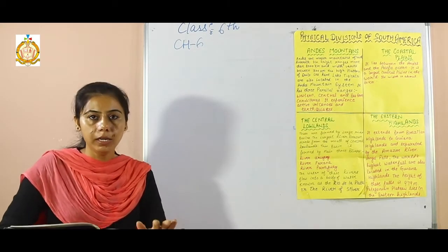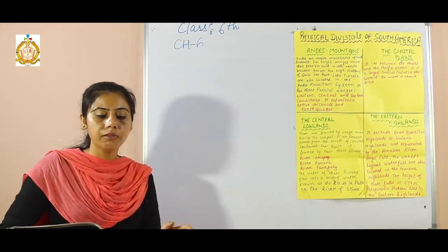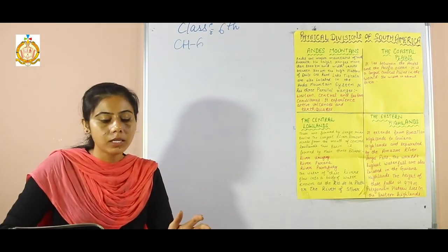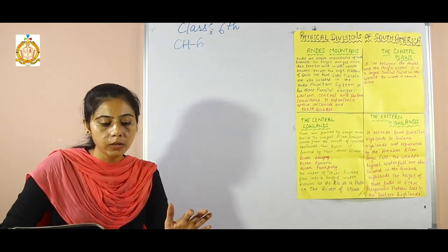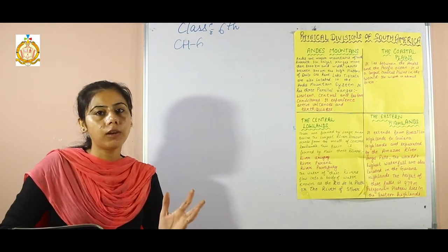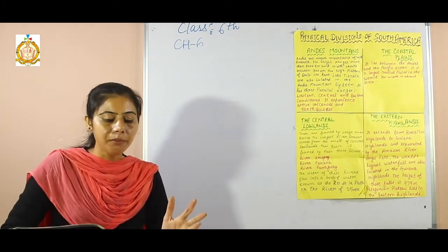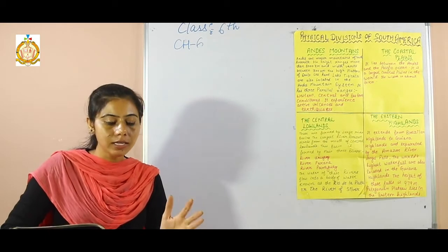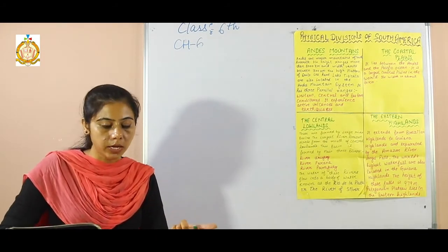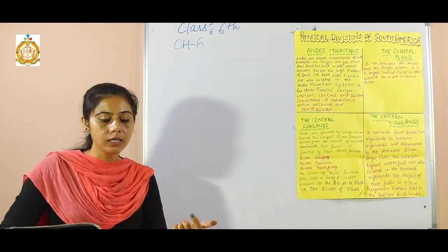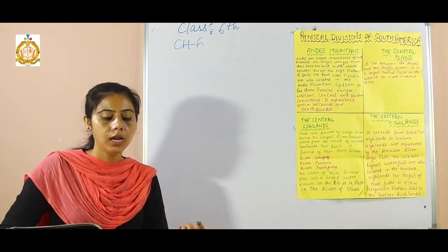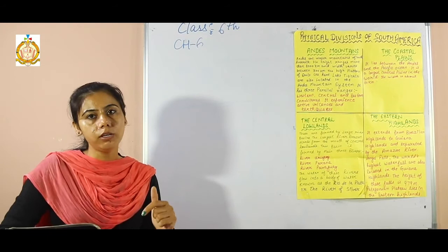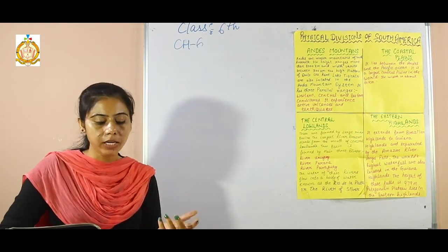The climate of the Amazon River Basin: since the Amazon River Basin is situated near the equator, it experiences two kinds of climate — a wet season and a less wet season. The wet season runs from September to May, and the less wet season is from June to August. The difference between day and night temperature varies between 2 to 5 degrees Celsius.